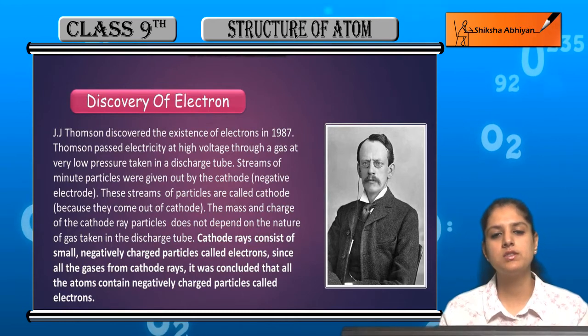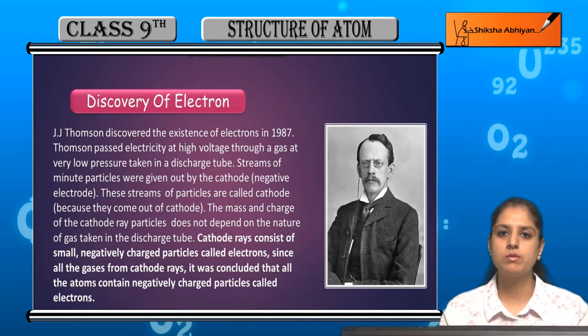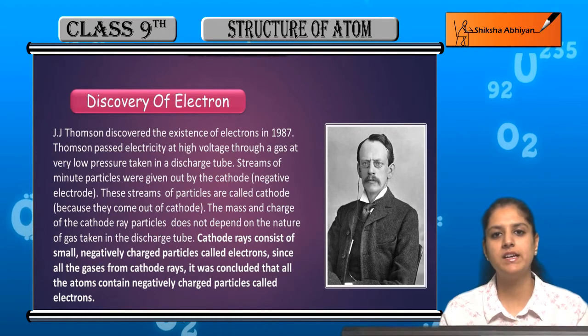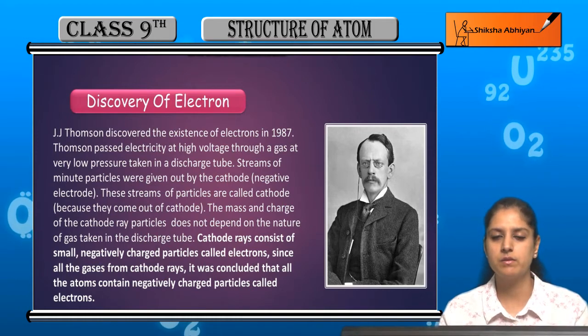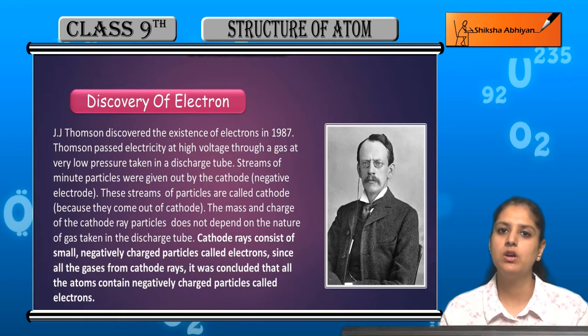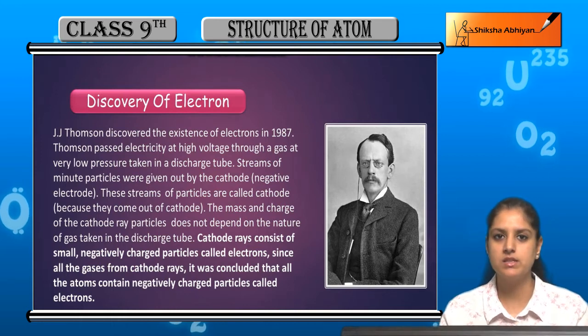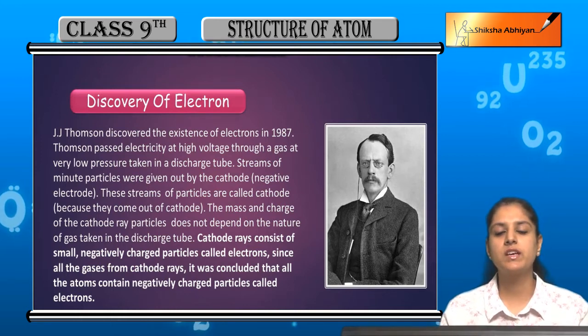How were electrons discovered? J.J. Thompson discovered the existence of electrons in 1987. He was a scientist and he conducted an experiment.